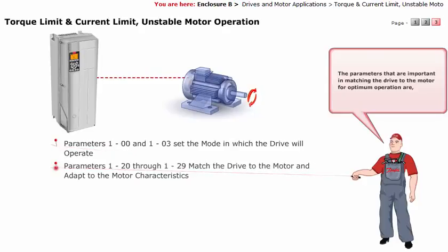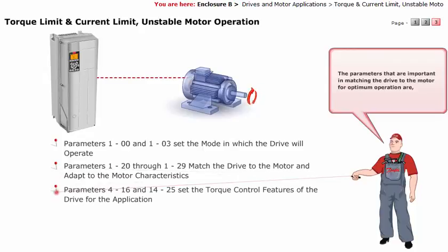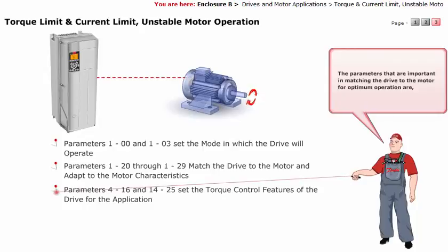Parameters 1-20 through 1-29 match the drive to the motor and adapt to the motor characteristics. Parameters 4-16 and 14-25 set the torque control features of the drive for the application.